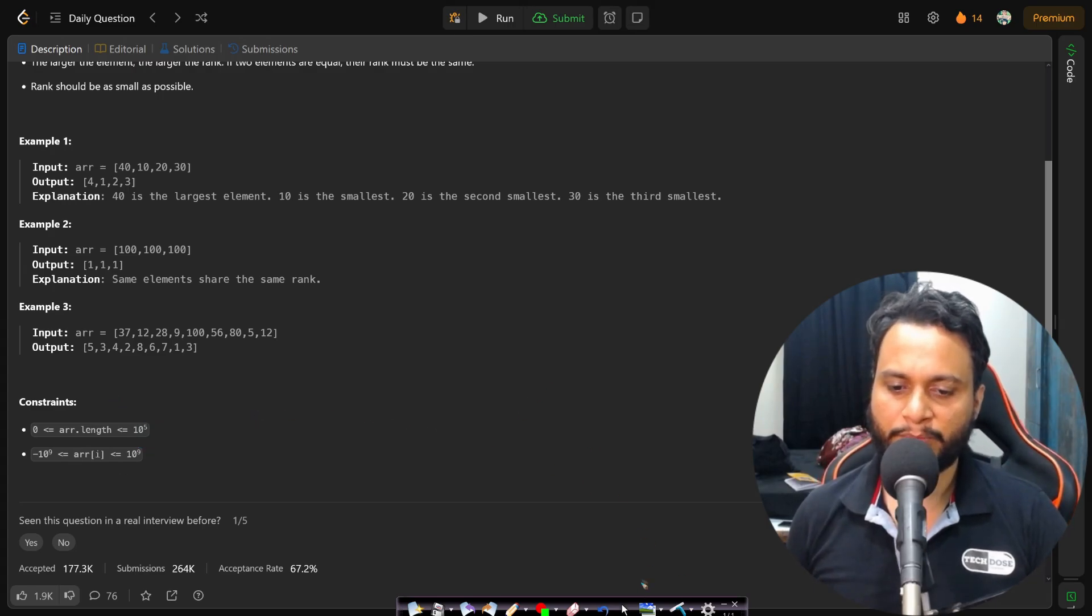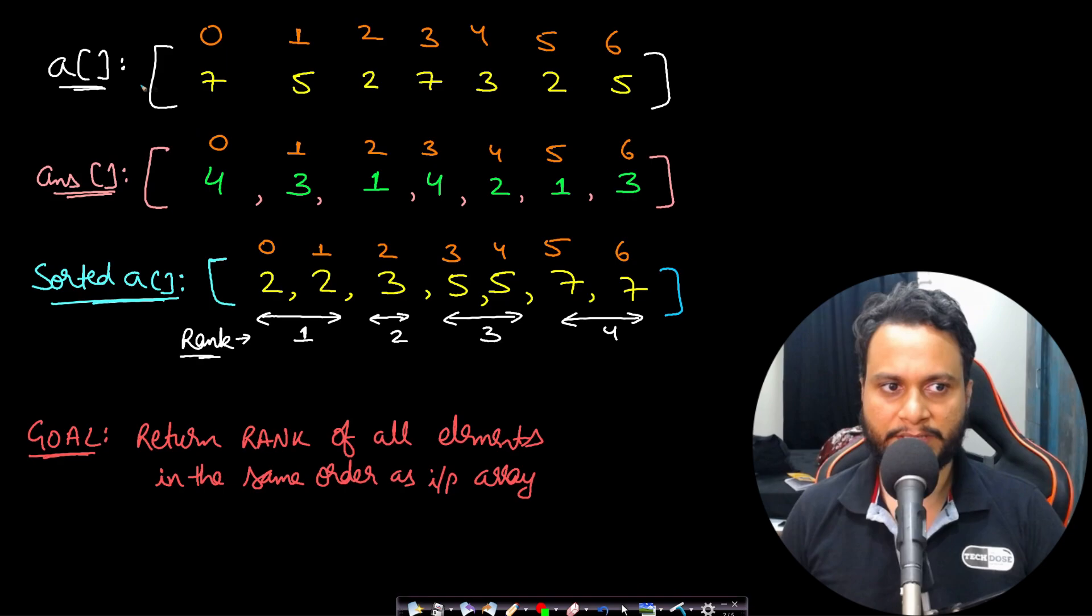Let's take an example for better understanding. In this example, we are given an input array and we need to return the answer which will contain the rank in exactly the same order as the input array. So the rank of this 7 will be 4, the rank of 5 will be 3, rank of 2 will be 1.